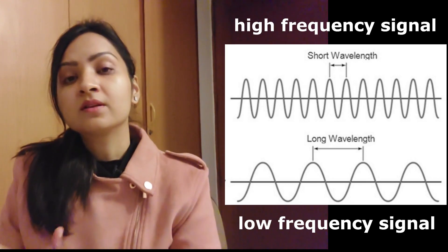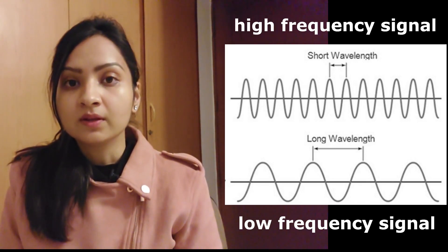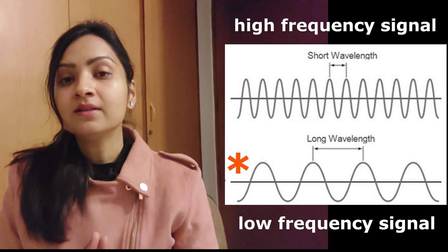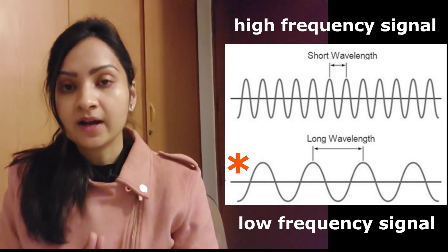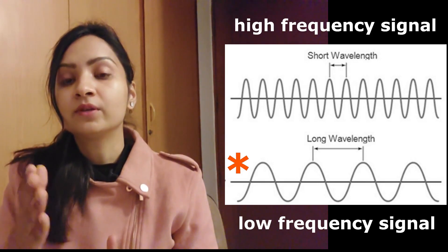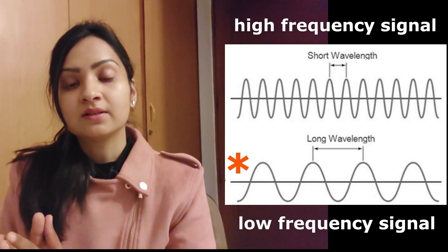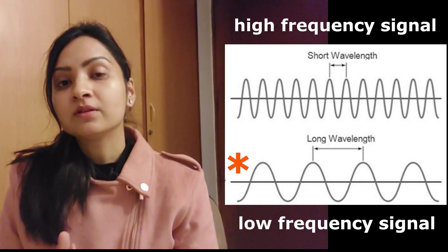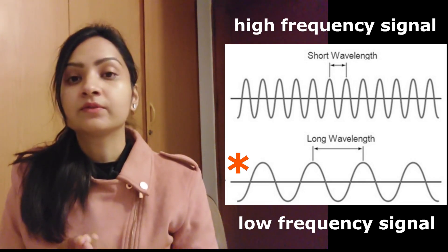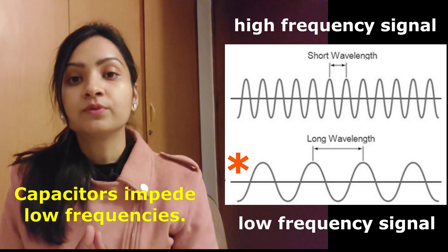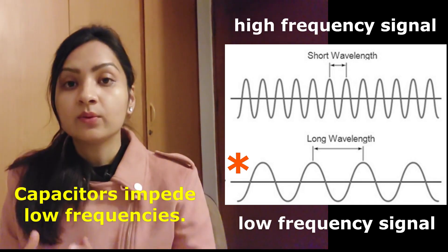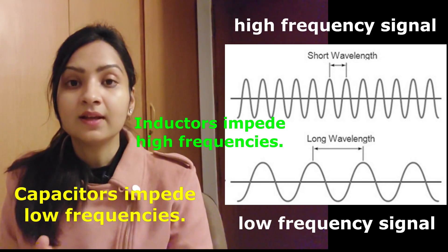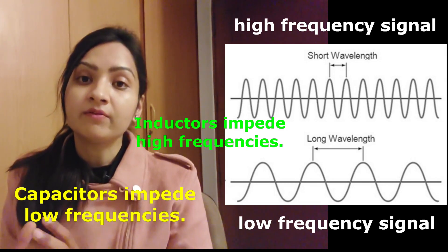Low frequency signals give sufficient time to capacitors to get fully charged. Once a capacitor is fully charged, it stops the flow of current. Because of this, capacitors can be used to filter out low frequency signals. Inductors, on the other hand, allow low frequency signals but impede and stop high frequency signals.